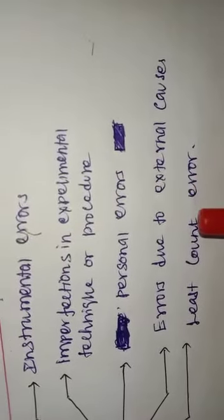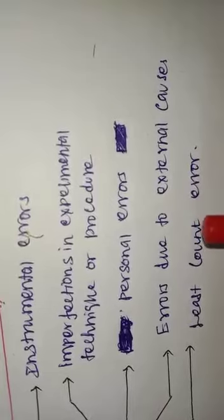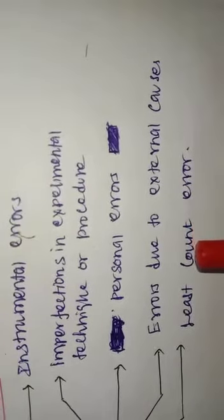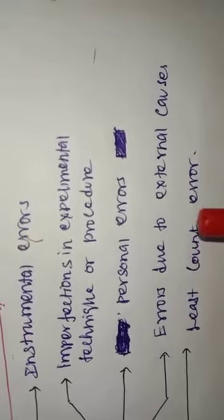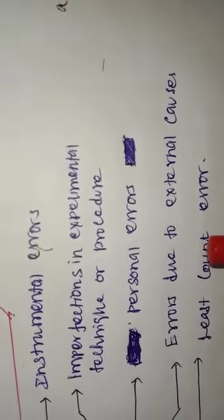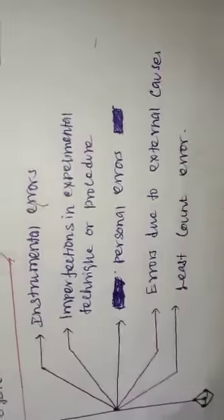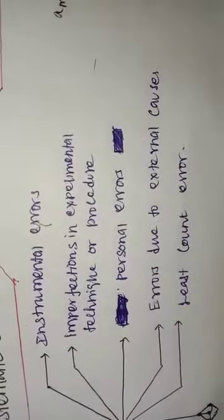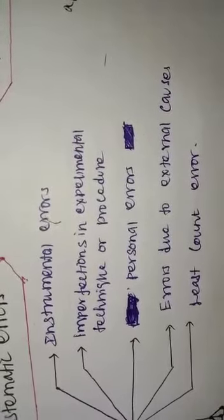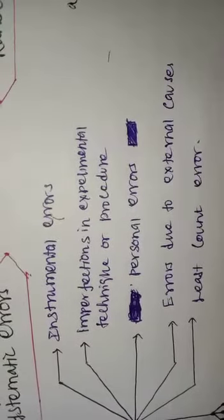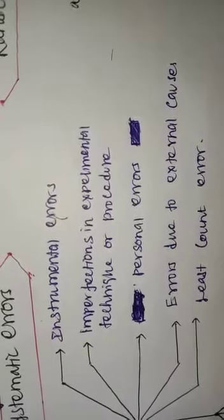Next is least count error. Least count is the smallest value that can be measured by a measuring instrument, and the error due to this measurement is called least count error. For example, in a 15-centimeter scale, the smallest value that can be measured is 0.1 centimeter — that is called the least count.